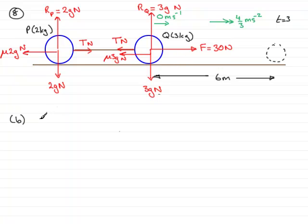Now, if I resolve to the right, basically applying force equals mass times acceleration, what I've got is that the F is 30 Newtons, acts to the right, and then I've got the frictional force here of minus mu 3g, minus because it's acting to the left. So, that's minus mu 3g.